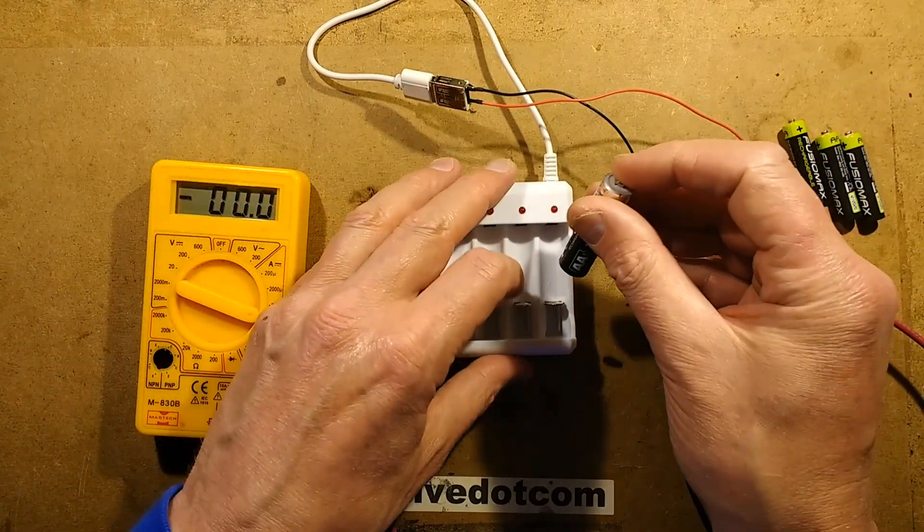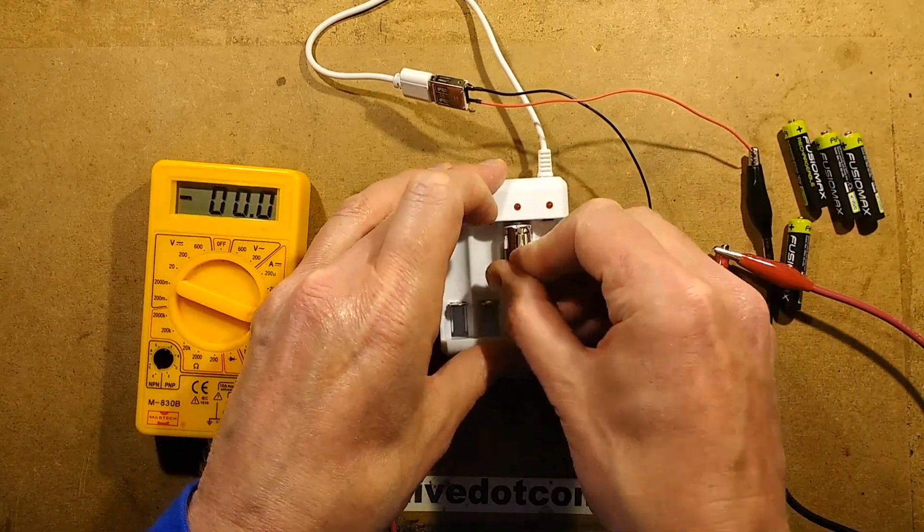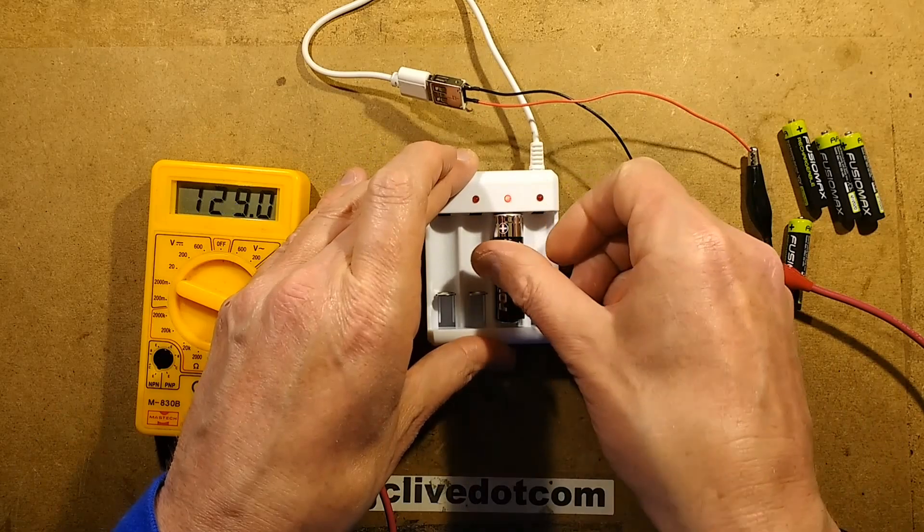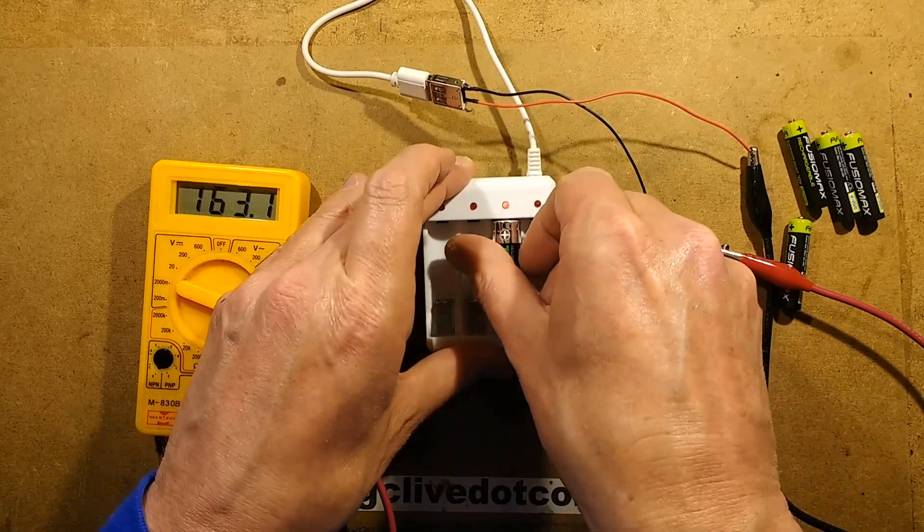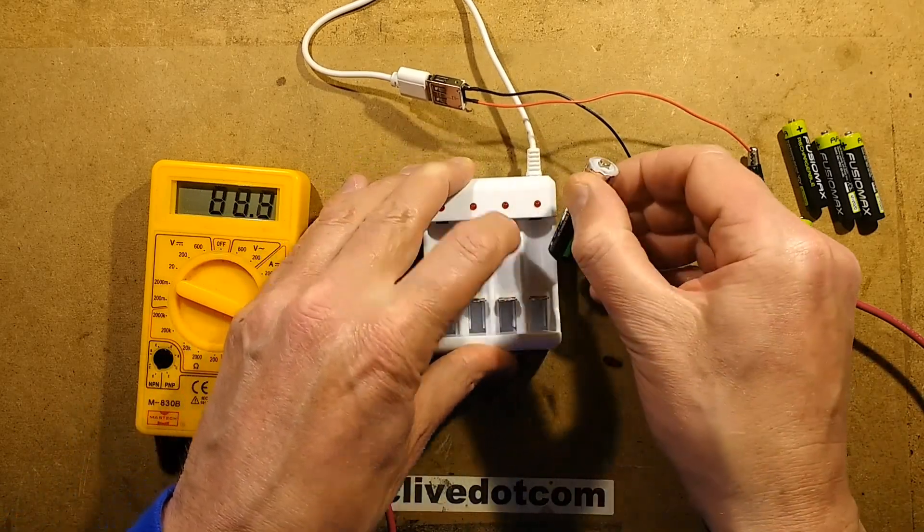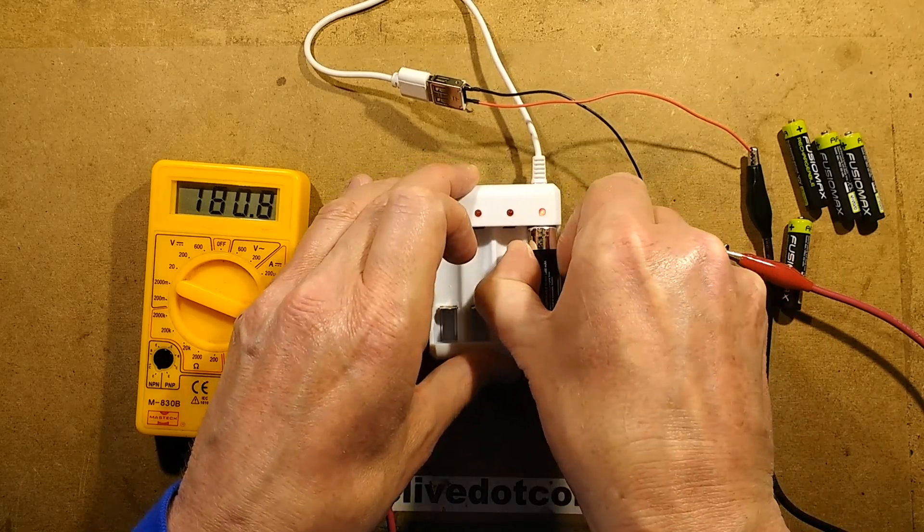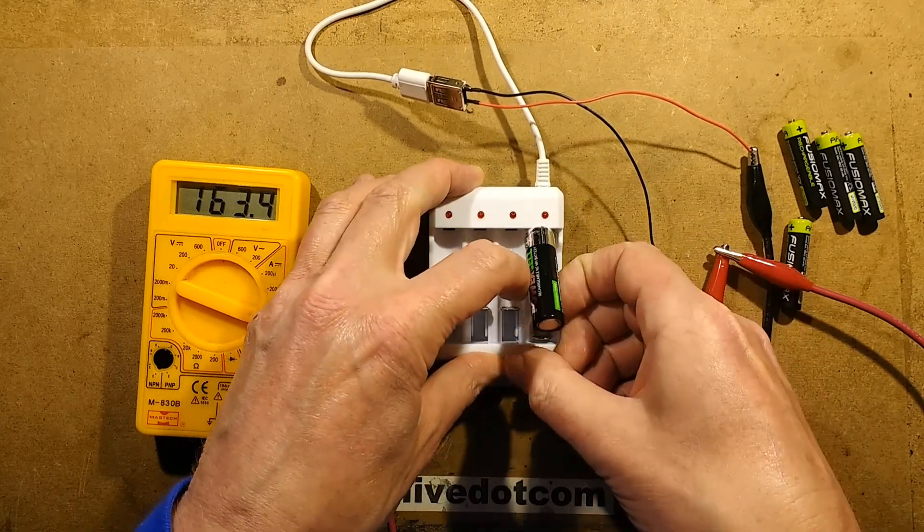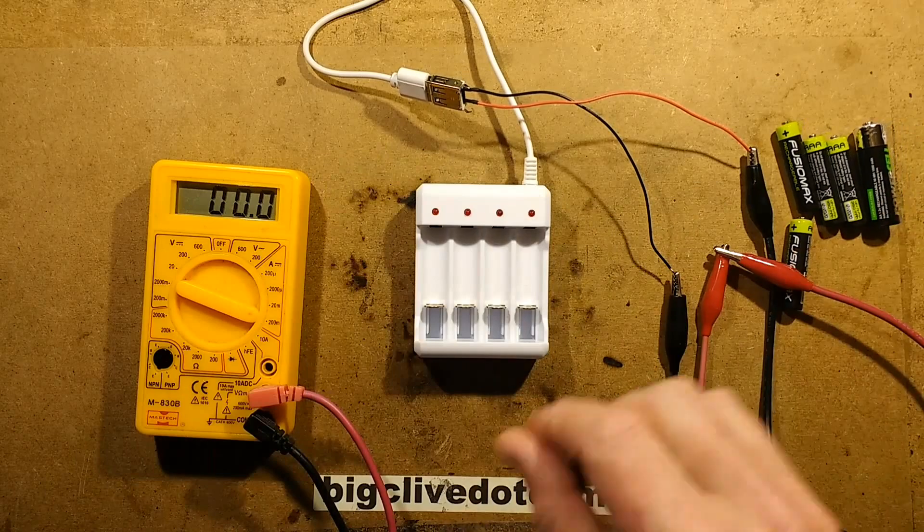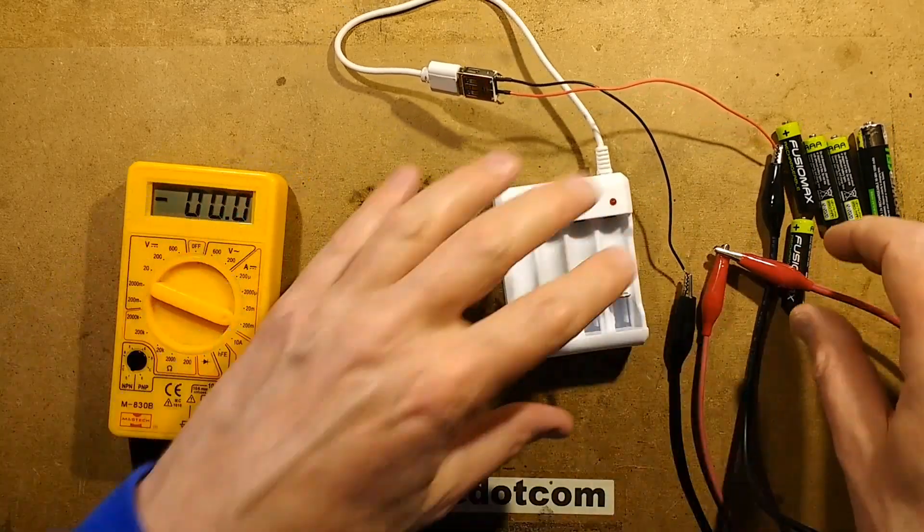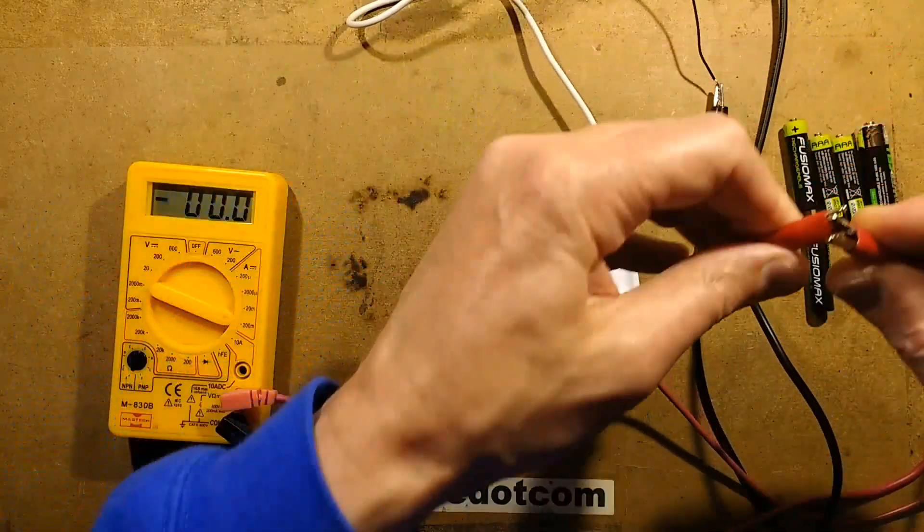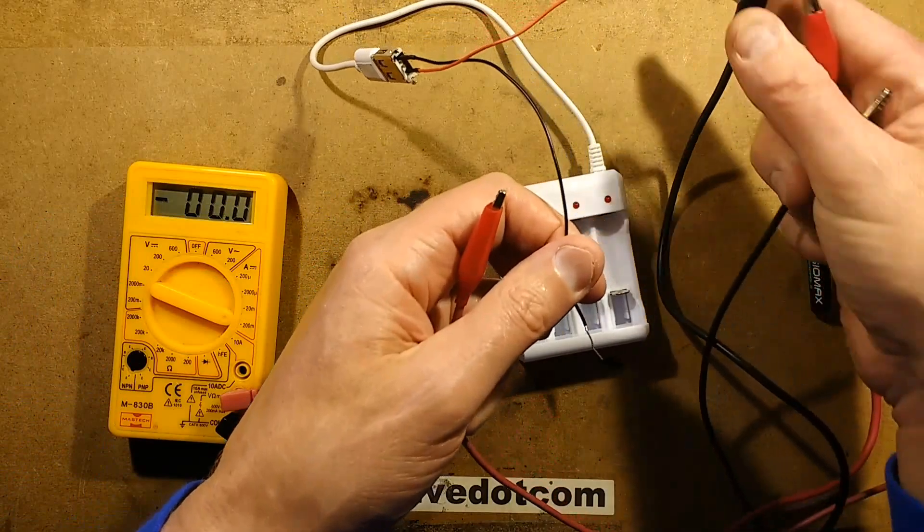Another thing, the AA cells, you put a AA cell in, that's really tight. It does charge once you give it a wiggle to make contact, but then getting it out again, depending on the position you put it in, some of them are so tight that it's actually really hard to get it back out again. But anyway, that's what you get for your money. So let's disconnect this now and do some other tests.